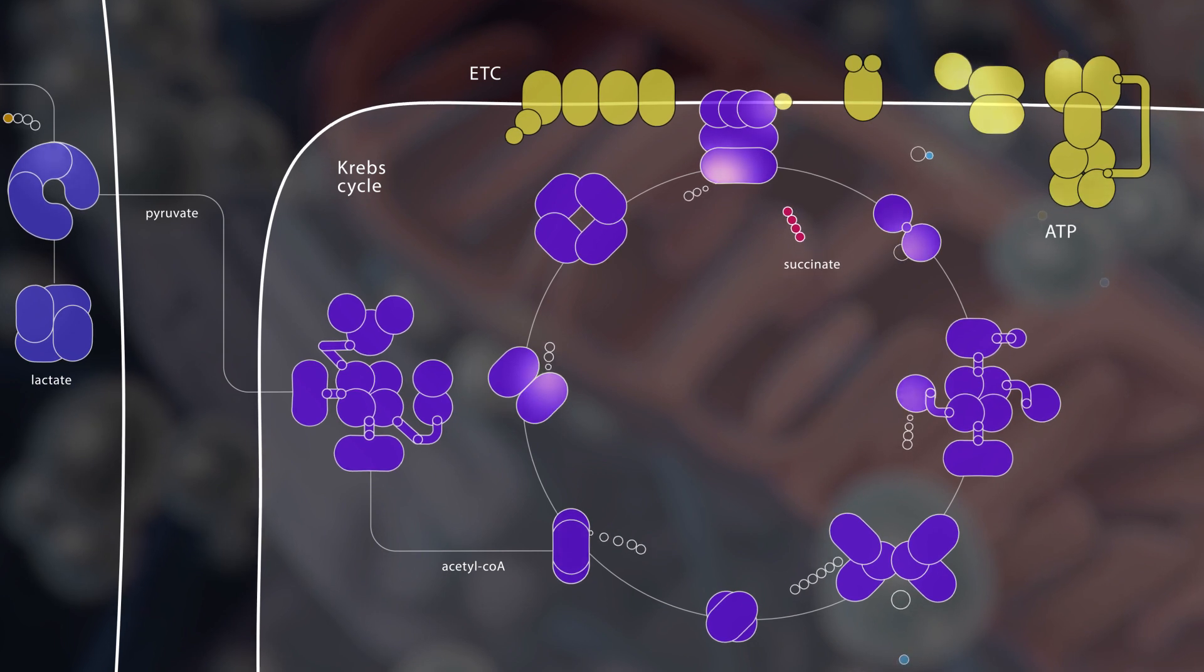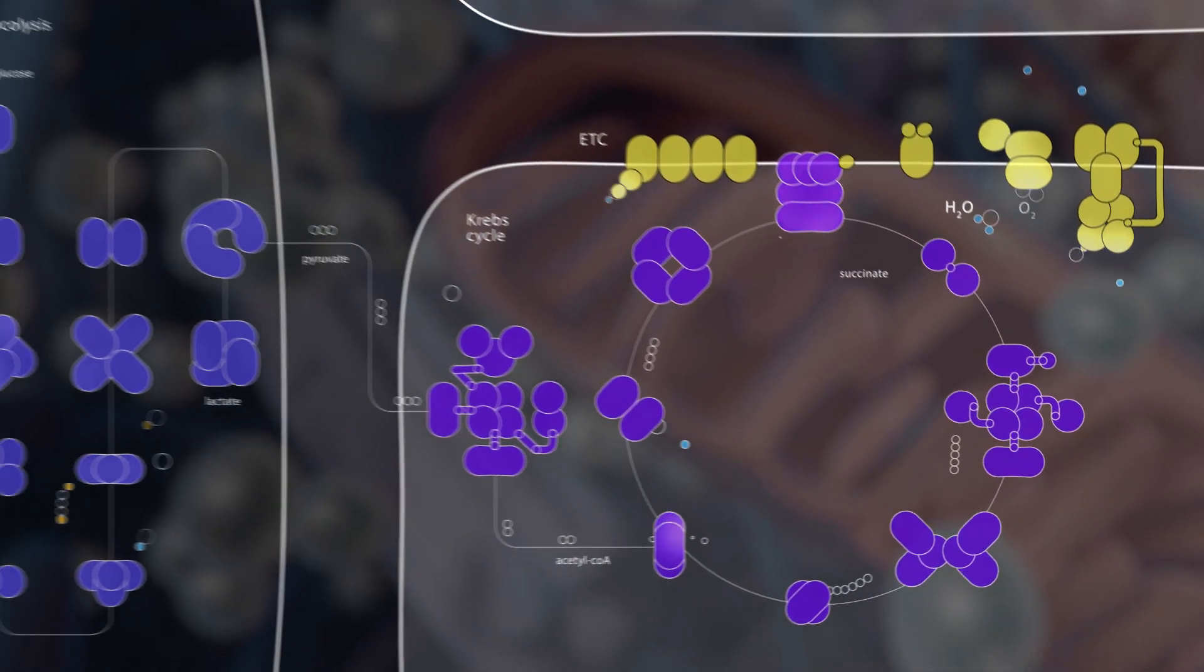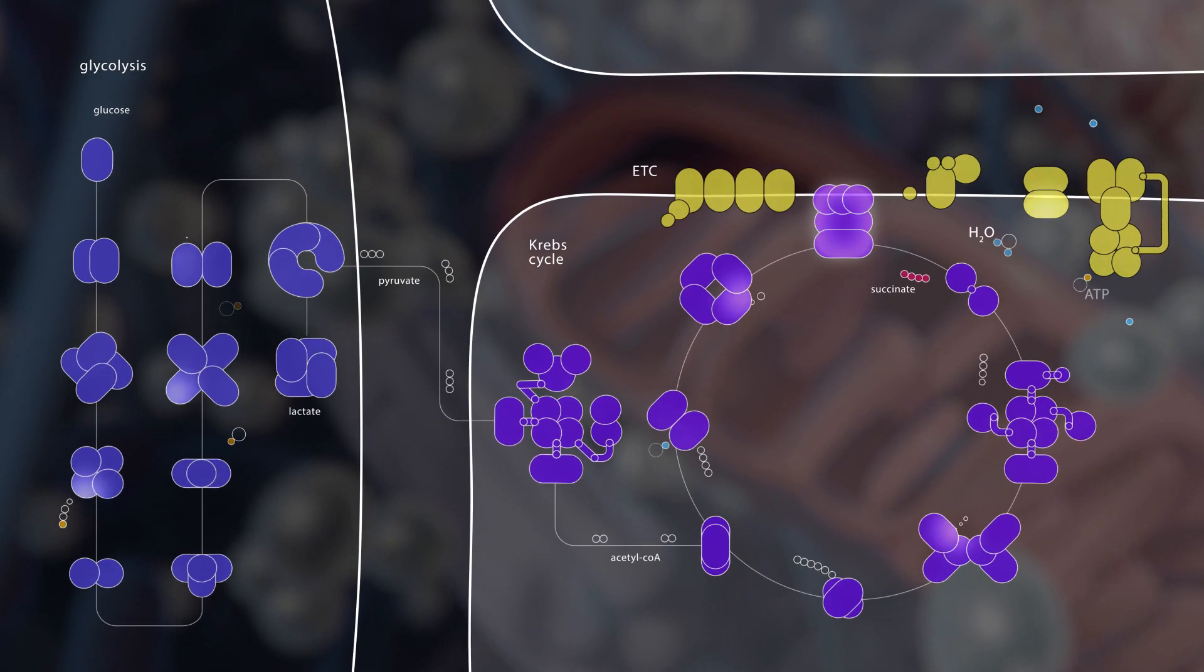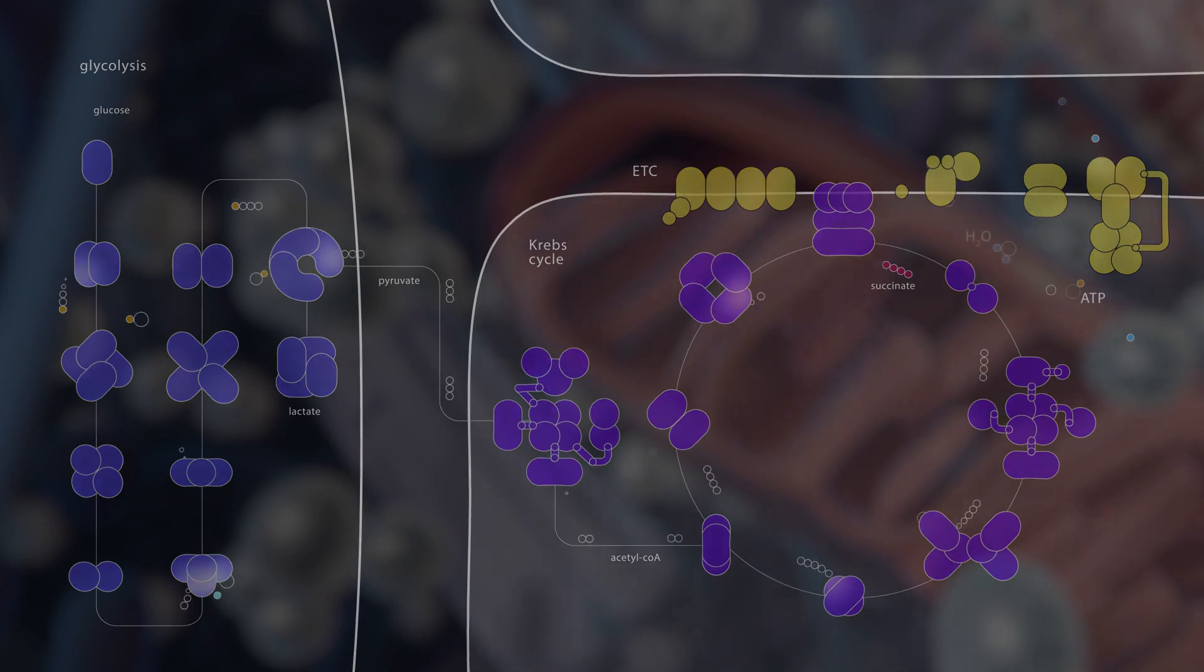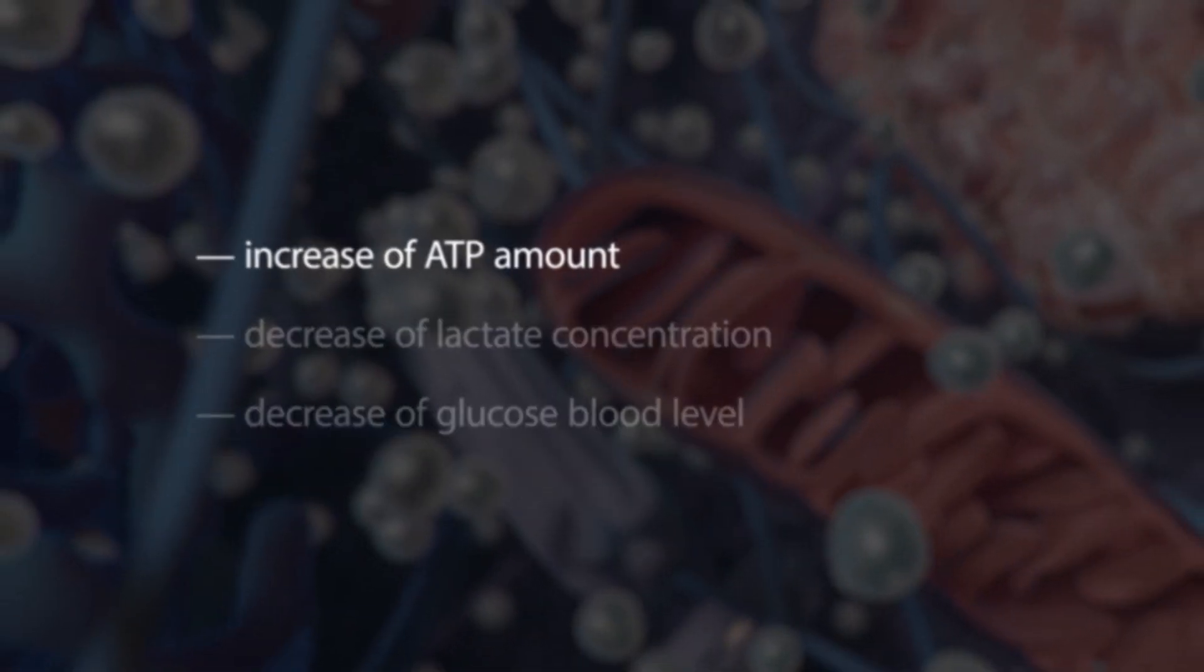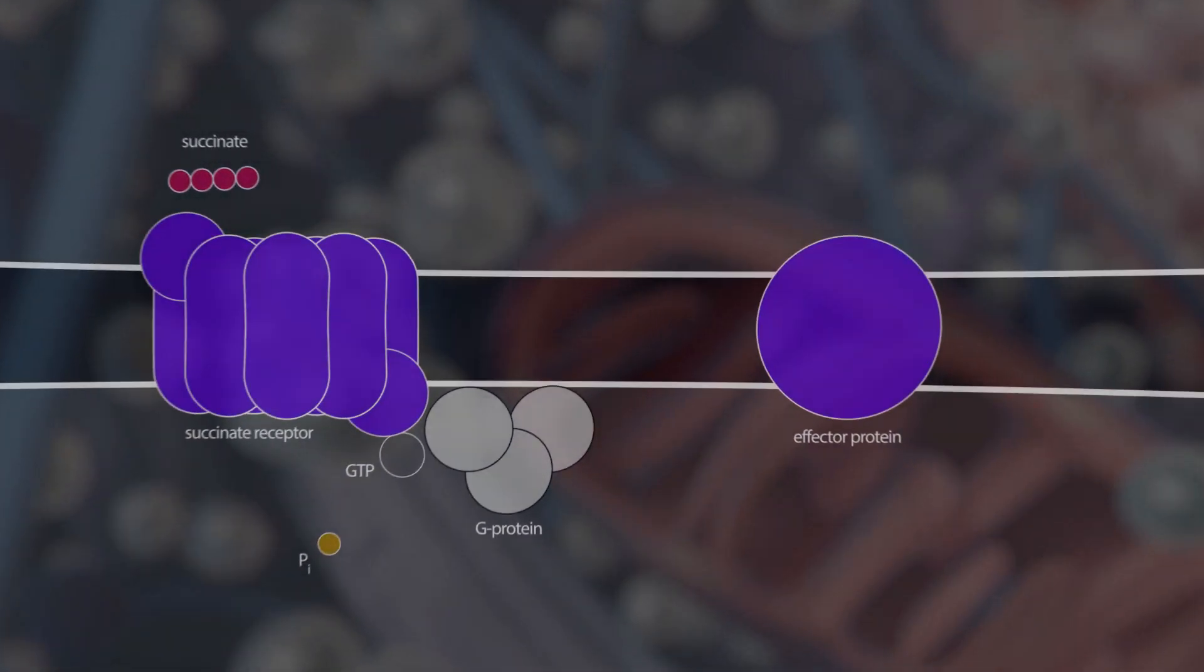The introduction of succinate activates the citric acid cycle and the electron transfer chain. Succinate is a substrate of succinate dehydrogenase that is a part of both biochemical cascades. The activation of succinate dehydrogenase helps normalize the concentration of ATP and lactate in the cells and decrease glucose levels in the blood.